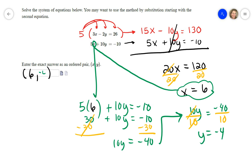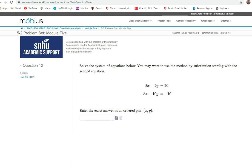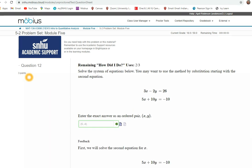That is the point where those two lines would intersect if I were to graph them. So (6, -4) looks good. How'd that do? You rock! Hope that helps.